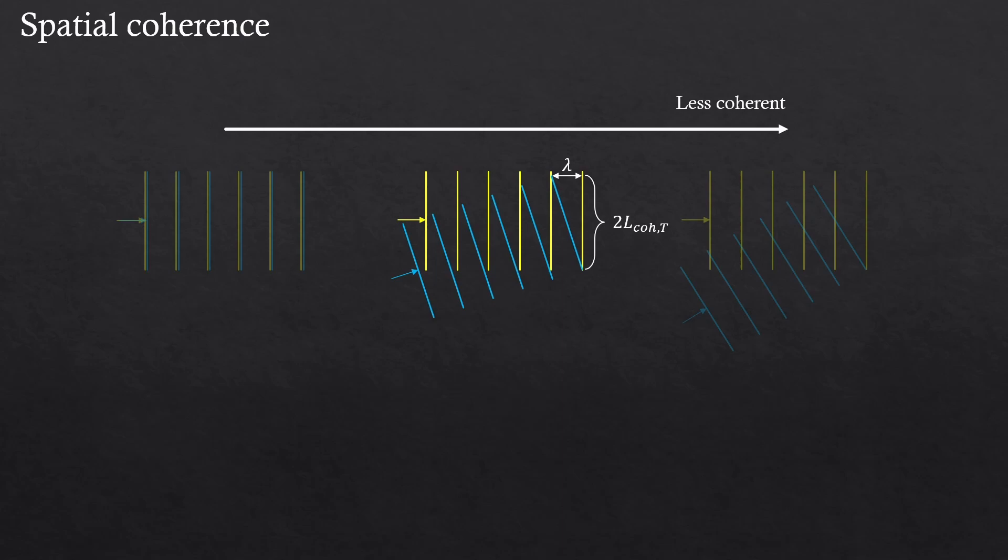Some of you might ask this too. Then what if they are parallel with each other, but traveling at different speed? That will change the phases, right? Yes, in that case, even if they propagate parallel with each other, they are less coherent. But that's temporal coherence, not about the spatial coherence. So let's not talk about that yet, okay?